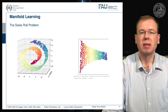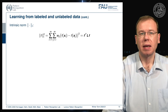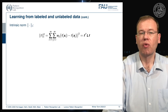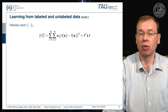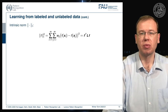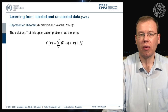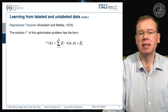Now let's look at learning from labeled and unlabeled data. We have the intrinsic norm that can be applied to our decision boundary in the reduced space. To compute it, we evaluate the decision boundary for two observations and weight them with the connection according to our graph — the entries W of our adjacency matrix. The representer theorem tells us that the solution of this optimization problem must have the form of a linear combination of kernels with weights beta and bias term beta_0.